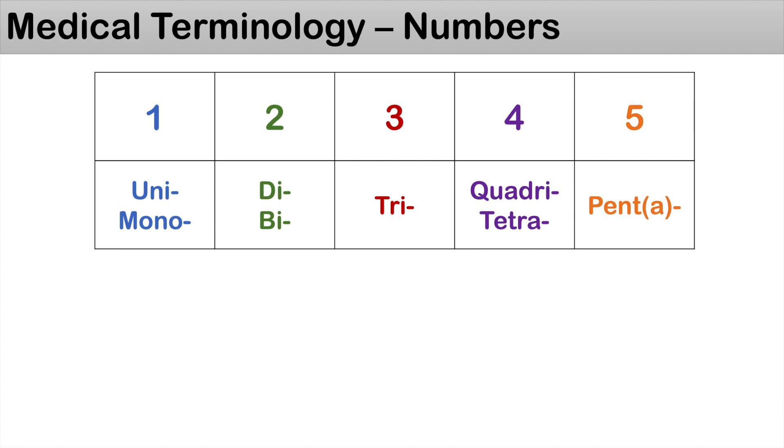For the number three, it's denoted by the prefix tri, so you can think of tricycle, something with three wheels. For the number four, it's denoted by the prefixes quadri or tetra, so you can think of quadruplets.